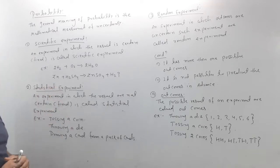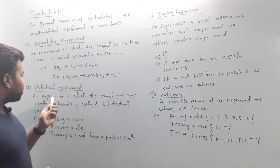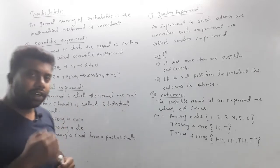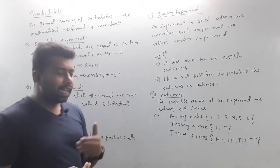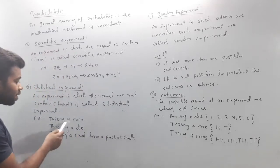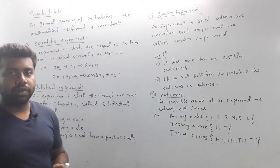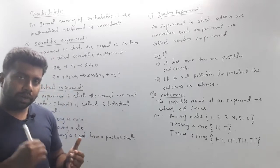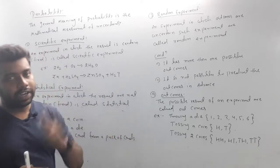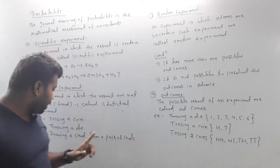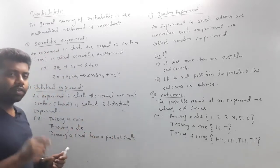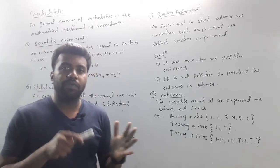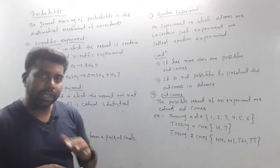If you study a statistical experiment, it is an experiment in which the result is not certain or fixed. For example, tossing a coin — either head or tail — you are not 100% sure which one it will be. Similarly, if you throw a die, the result is either 1, 2, 3, 4, 5, or 6 — you cannot be certain in advance.